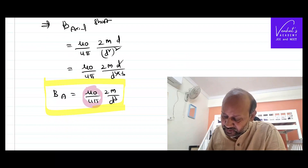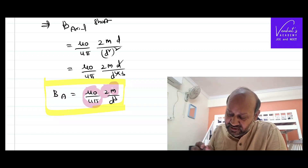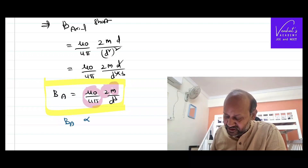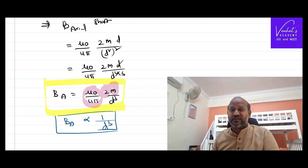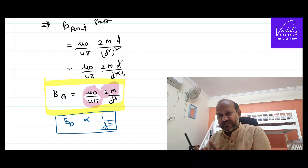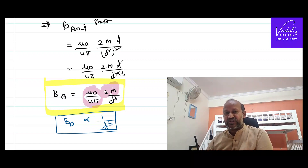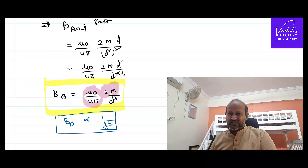Since μ₀/4π and 2 are constants, and the magnetic moment M of a bar magnet is also a constant, for a short bar magnet the magnetic induction on the axial line is inversely proportional to the cube of the distance from the center of the bar magnet. The entire derivation is based on the simple definition of magnetic induction as the force on a unit north pole — the rest is straightforward mathematics.